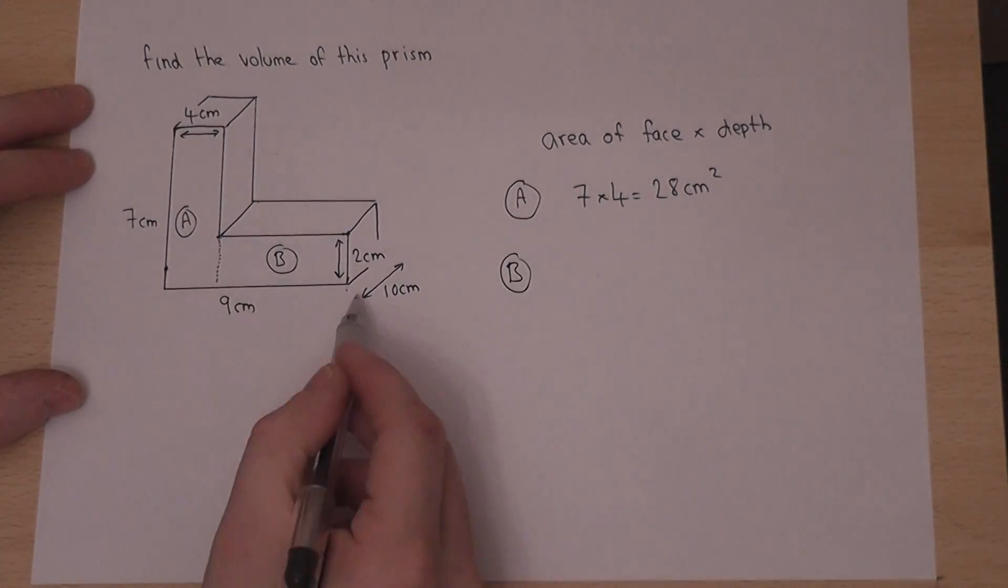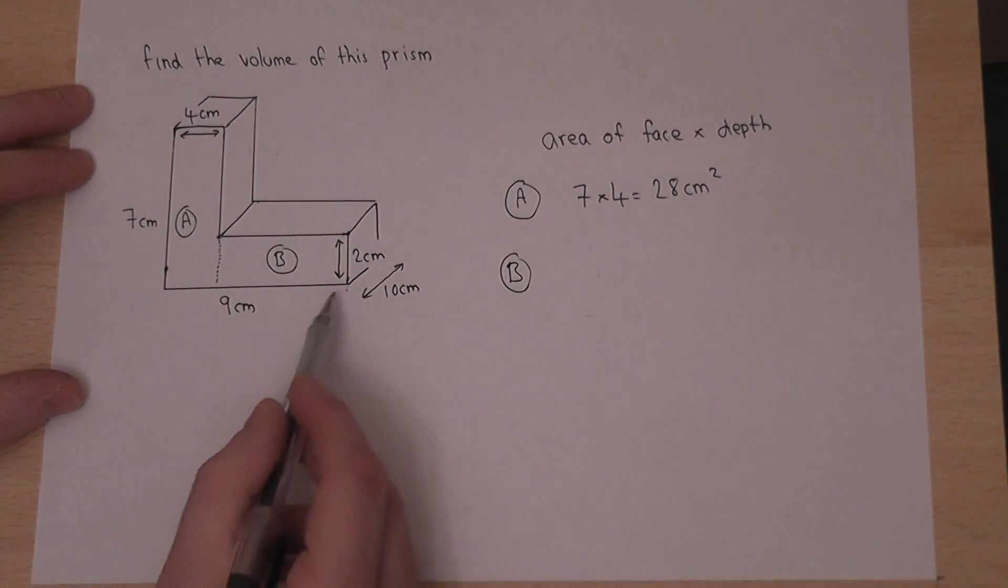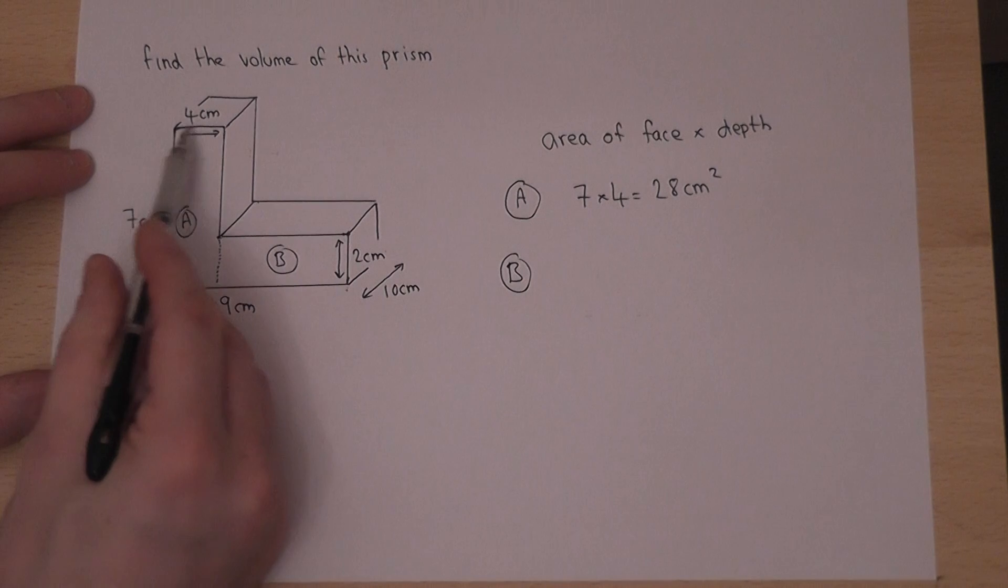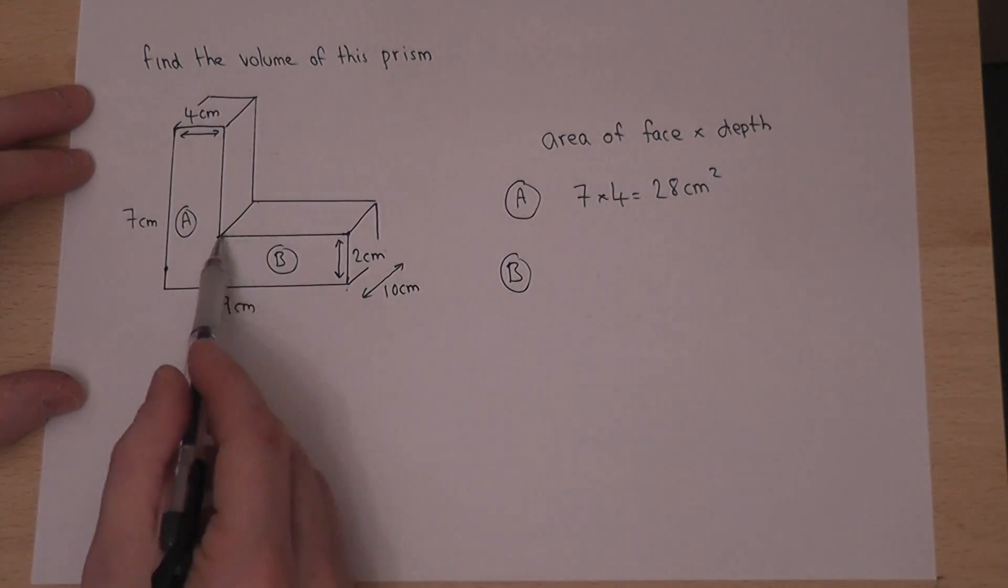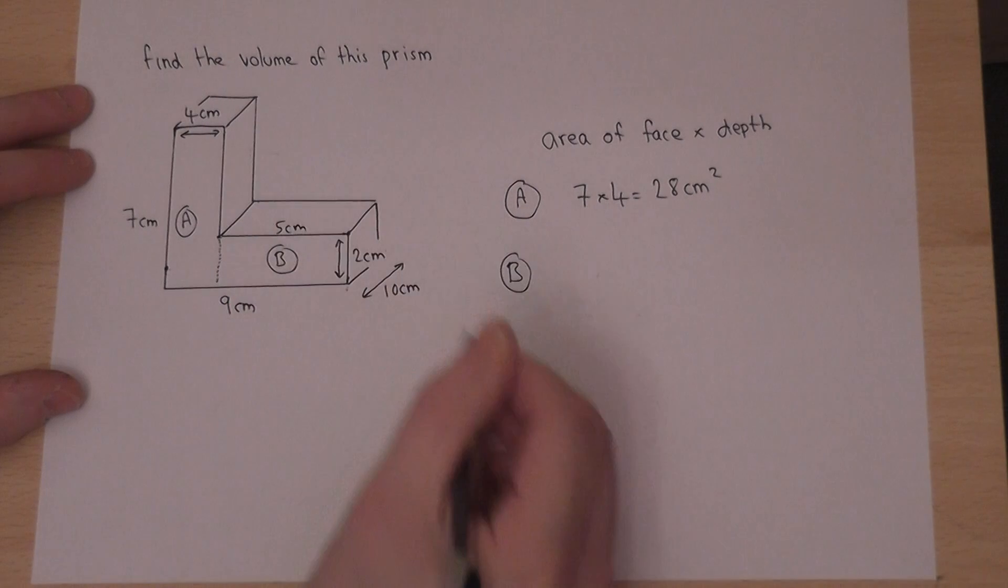Now rectangle B has a height of 2, but its base is not 9. 9 is the entire width of the shape, but because that's 4 and that's 9, the leftover must be 5 centimeters.